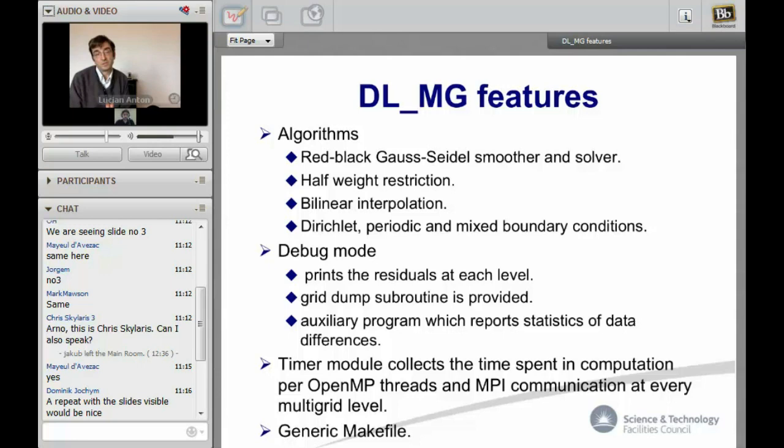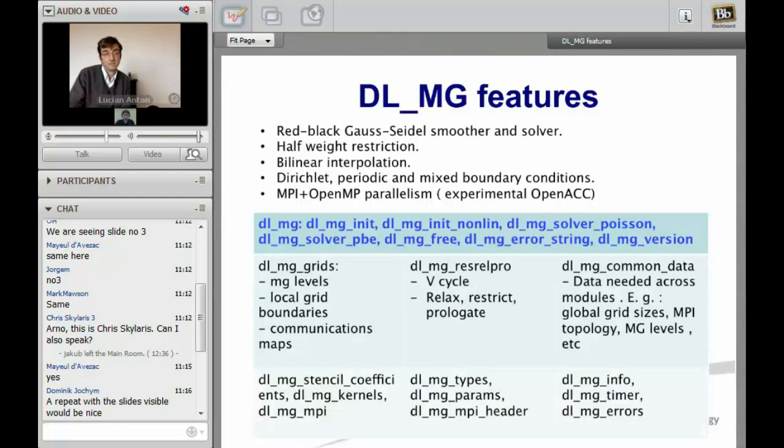To recap, the smoother is a red-black Gauss-Seidel and uses the so-called half-weighted restriction and linear interpolation. The boundary conditions can solve problems with Dirichlet and periodic and mixed boundary conditions. The parallelism is MPI plus OpenMP with only one region. I have an experimental branch done by my colleague Mark Molson which implemented OpenACC, but that one is not fully merged in the branch.